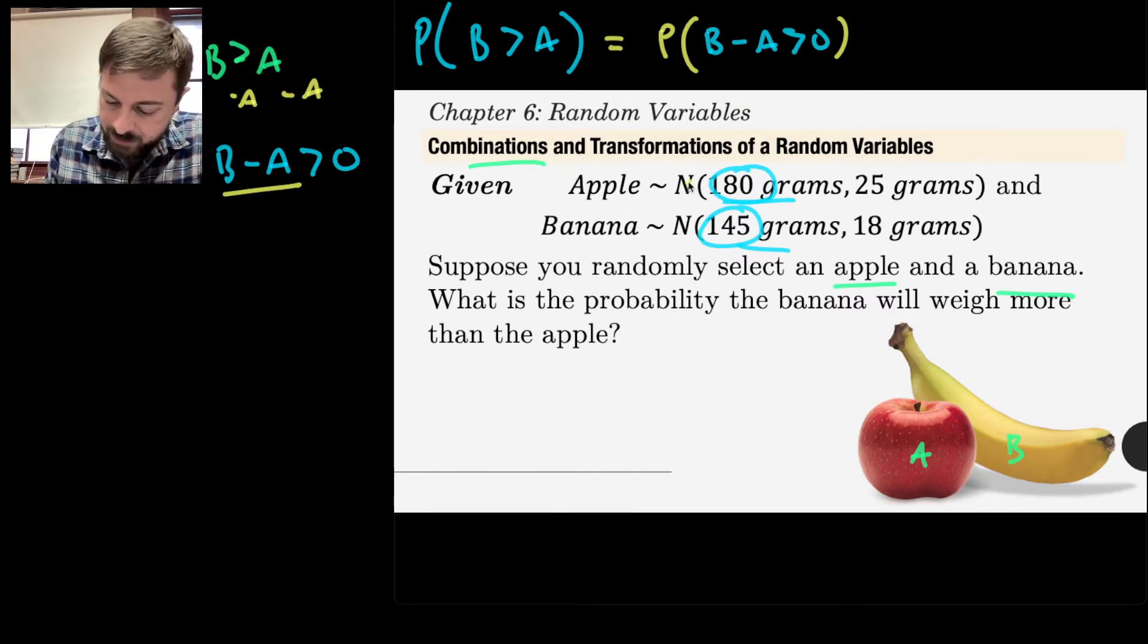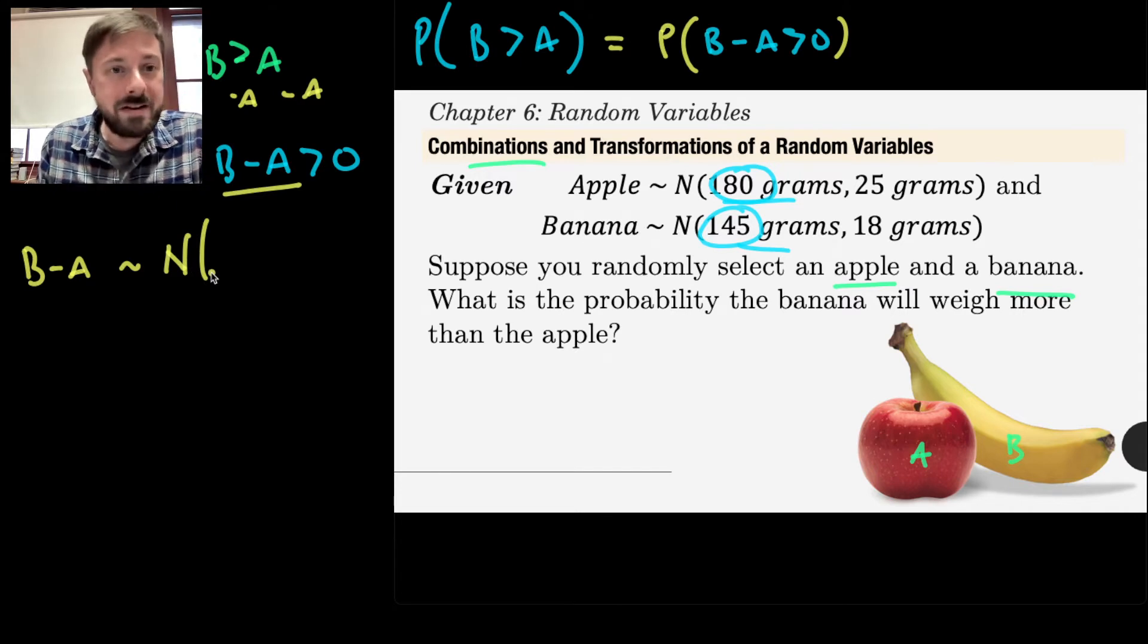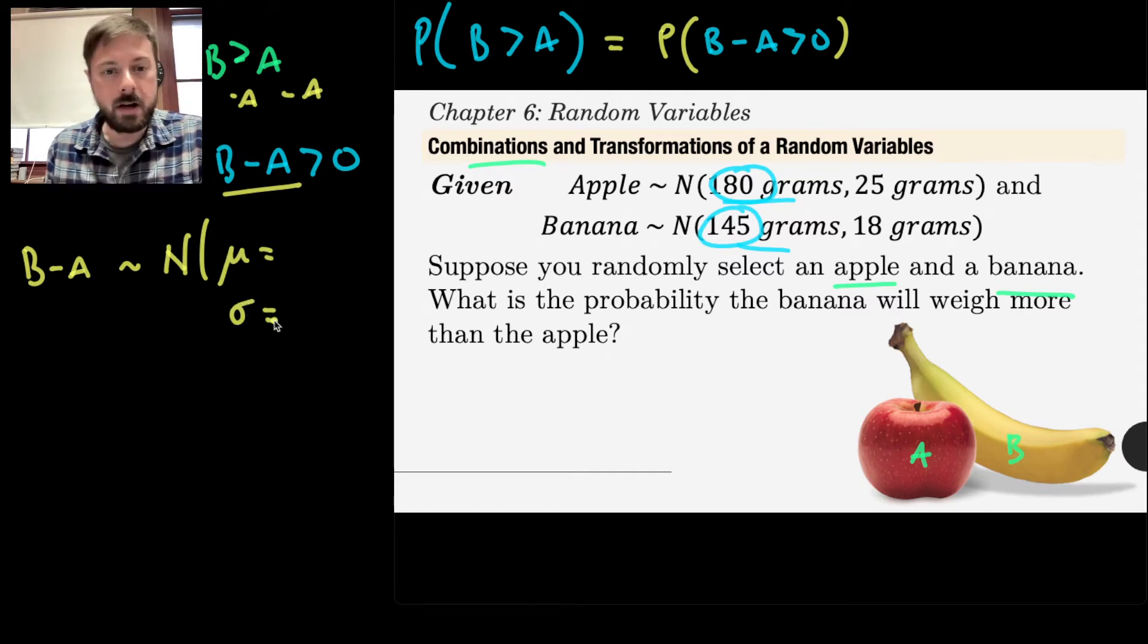Well, first of all, since I see both the distributions of the weights of apples and bananas are normally distributed, then the distribution of B minus A is also going to be normally distributed. I don't have a proof for that for you today. Just believe me that the sum or the difference of independent, normally distributed random variables will also be normally distributed.